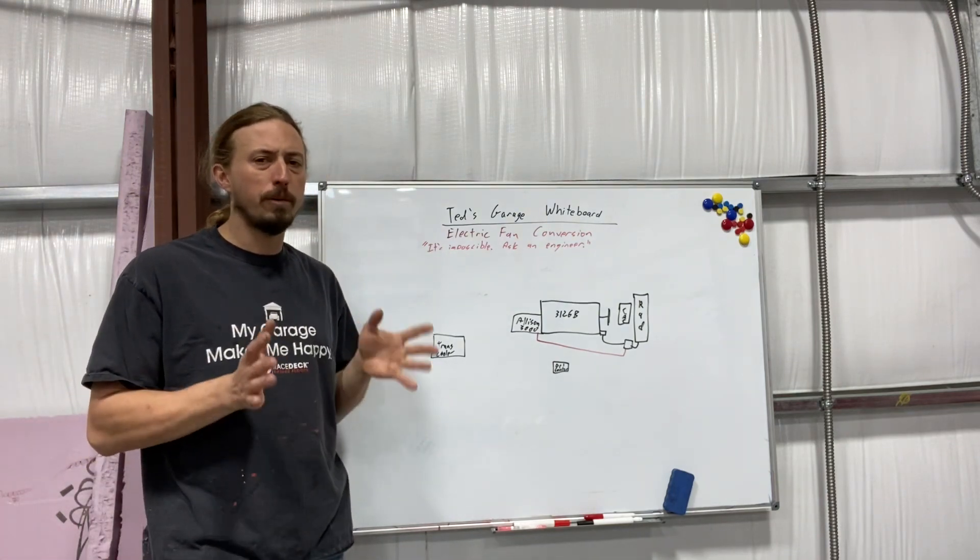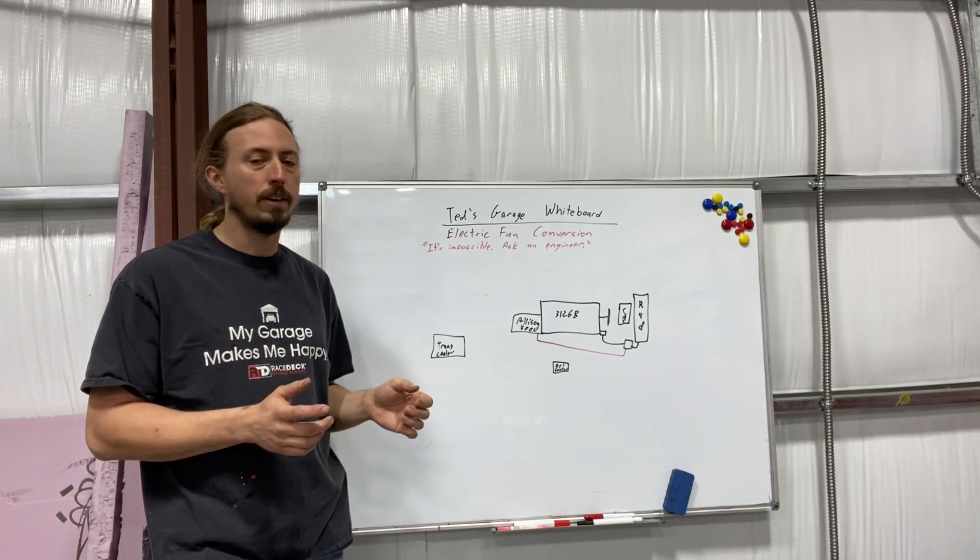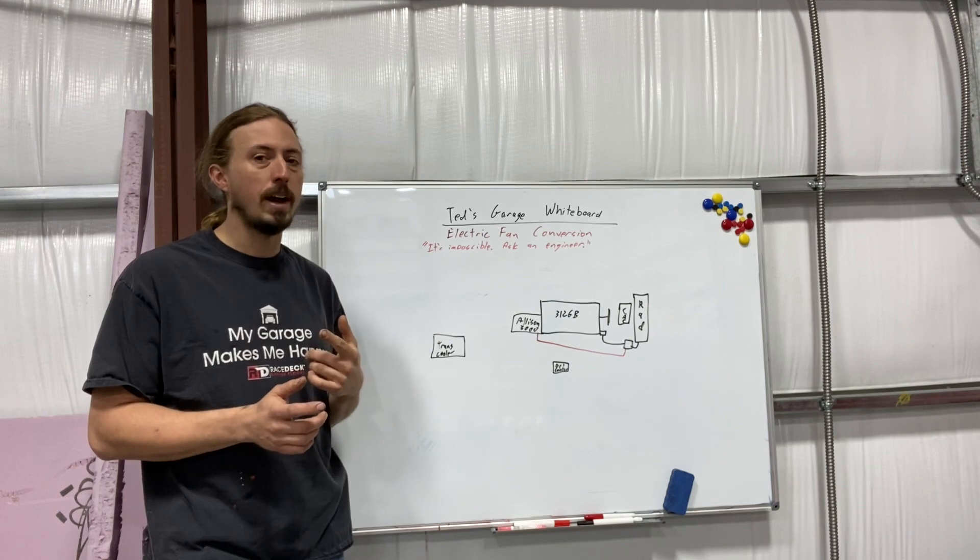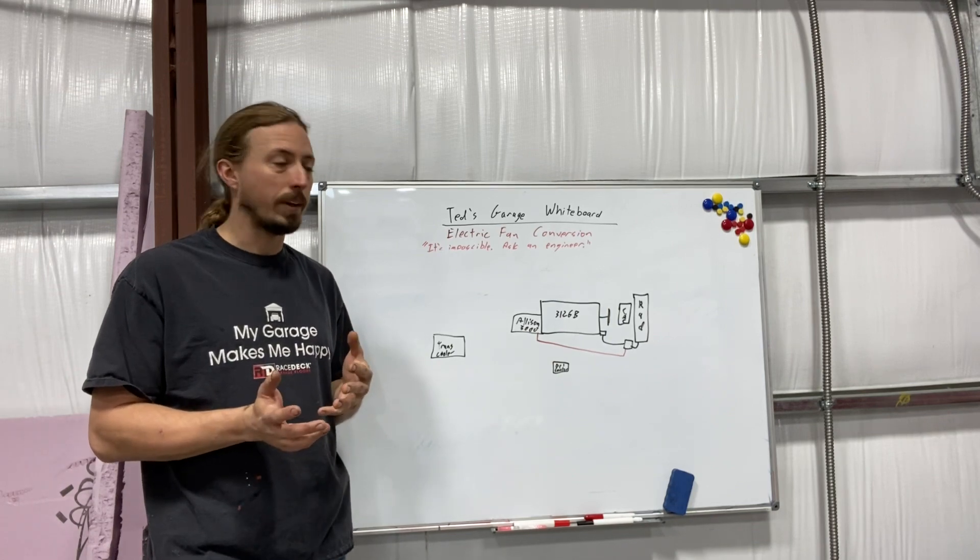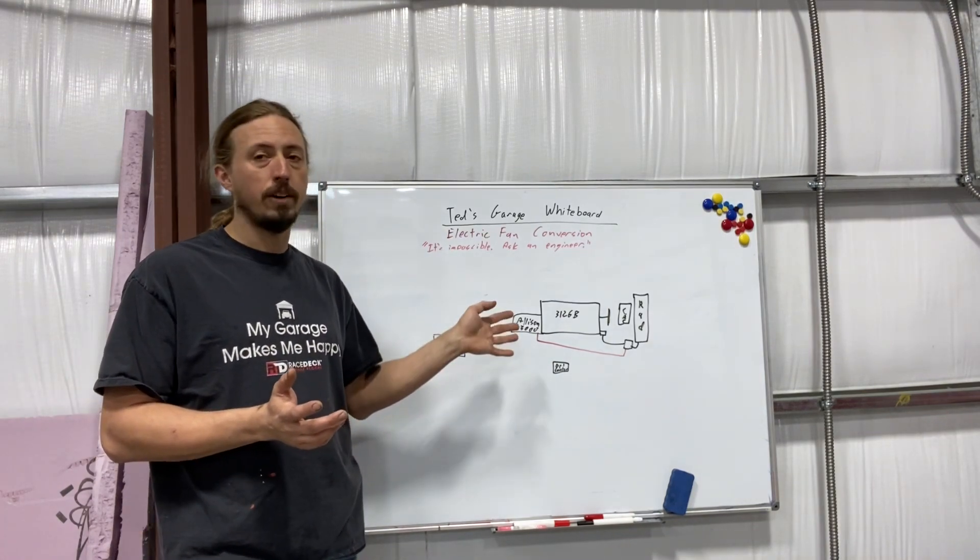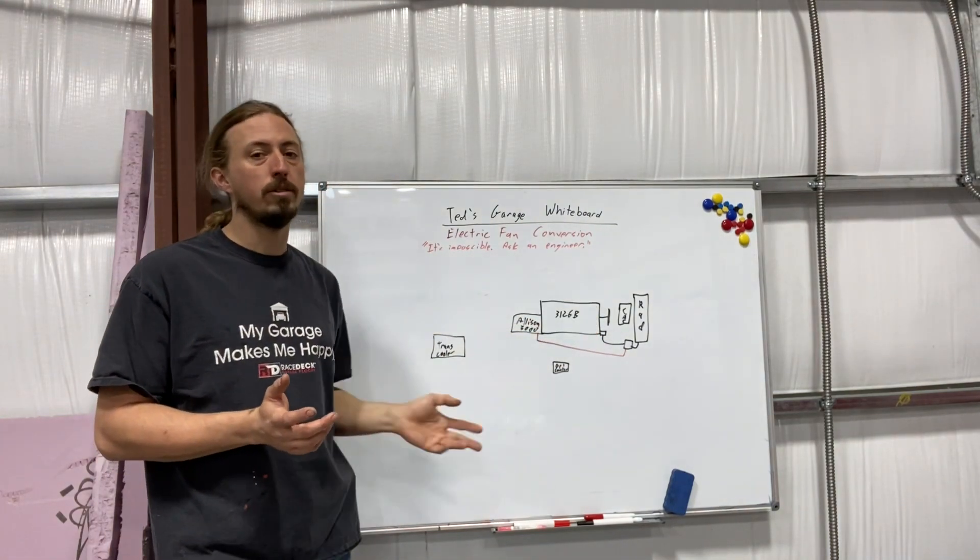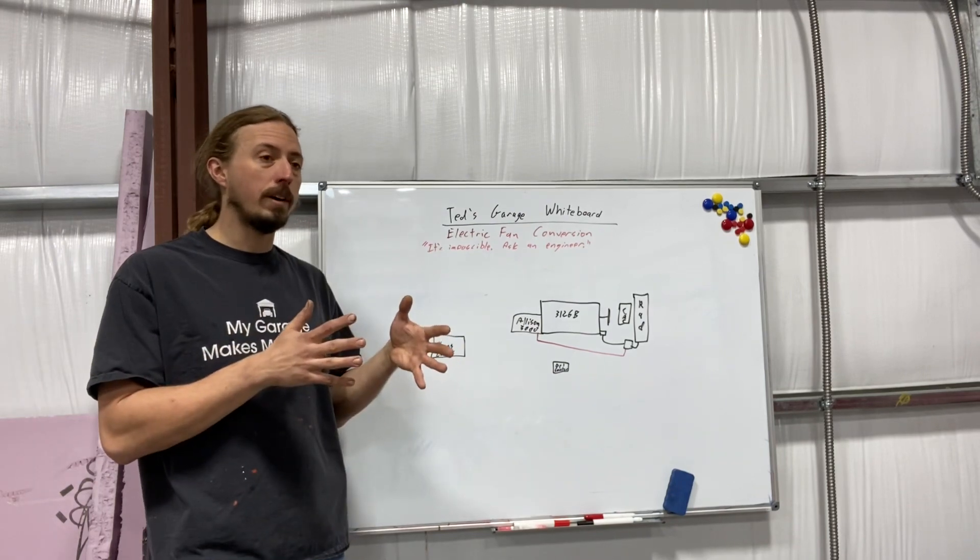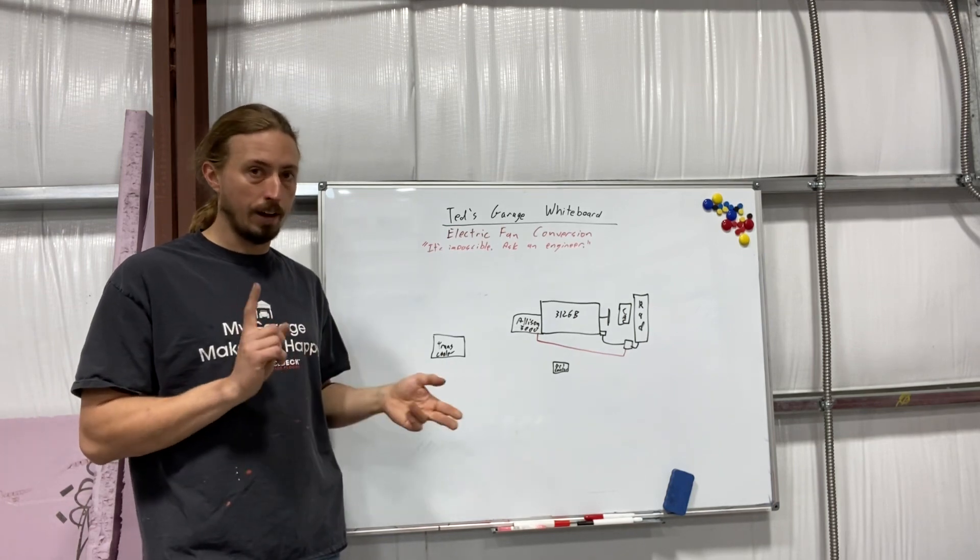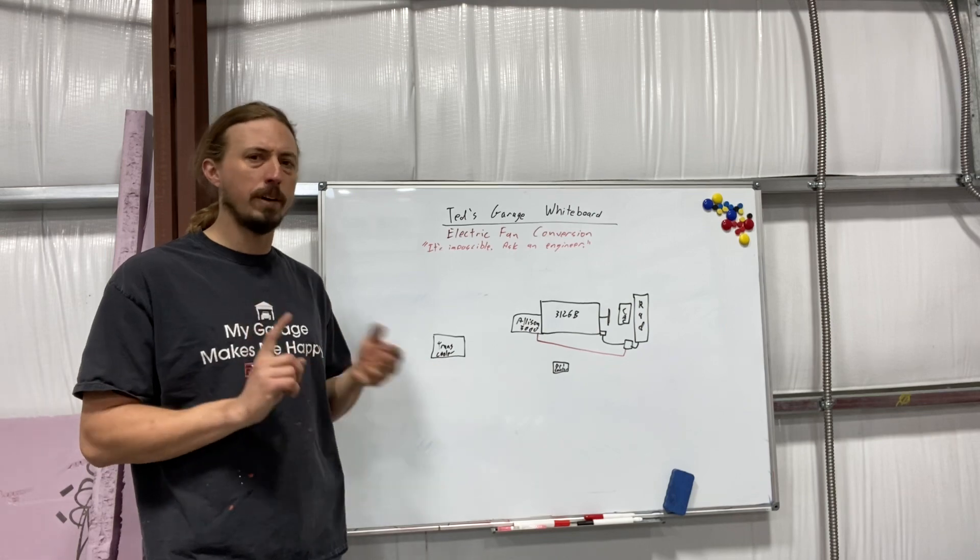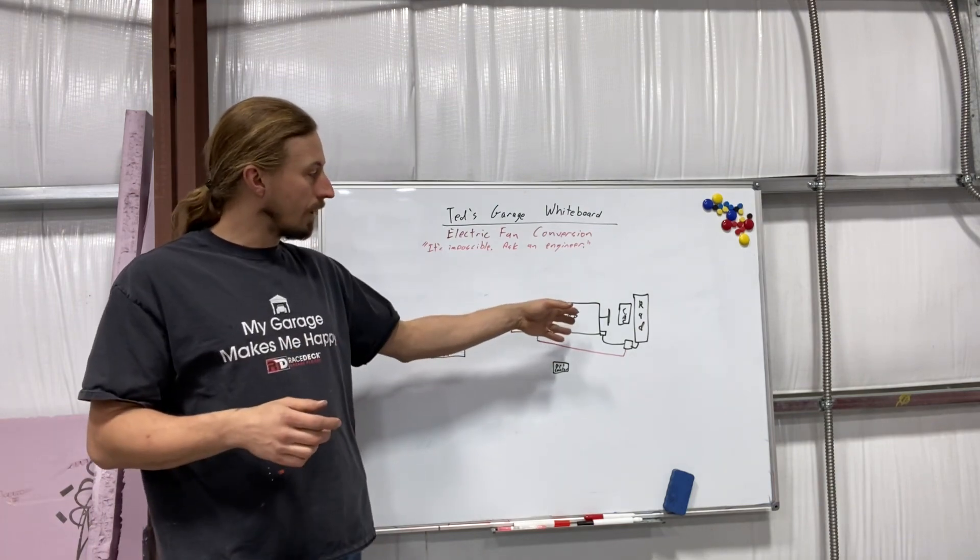So first off, what are we going to be doing here? Currently, the factory cooling system on this RV, which has a Caterpillar 3126B engine attached to an Allison 3000 transmission, it's a rear radiator setup and it has the factory cooling setup has a single big mechanical fan. It's direct driven, there's no clutch, moving the same amount of air relative to engine RPM, but it's always going to move the same air regardless of the coolant temperature, the outside air temperature, whether you're going uphill, down a hill, doesn't matter.